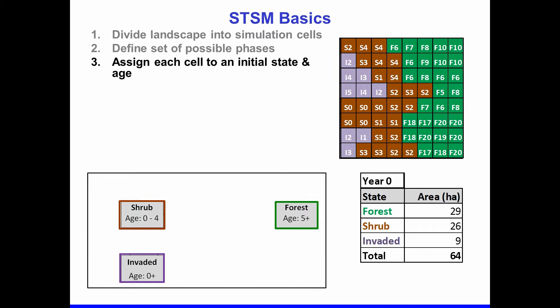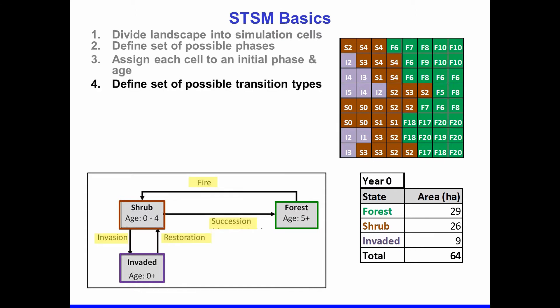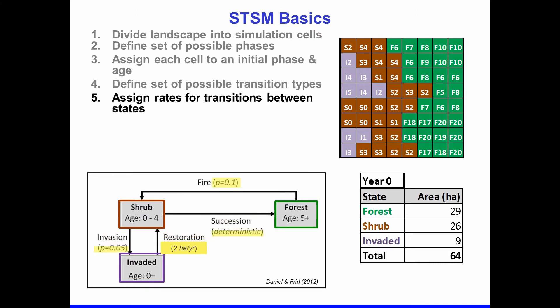That is summarized on the right for this hypothetical 64-hectare landscape. After the states have been defined, we then define the transitions that can move any one of these cells from one state to another. The next step — where we begin to differ from purely conceptual models — is that we need to assign rates for the transitions between states: how often and how quickly do they happen over time?